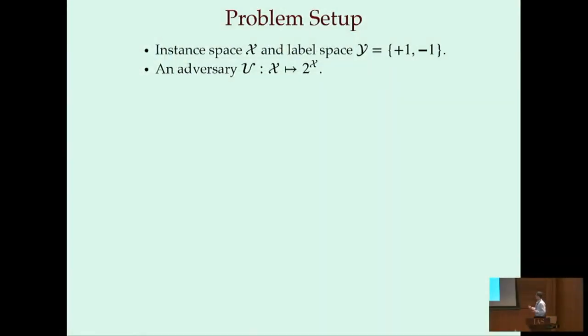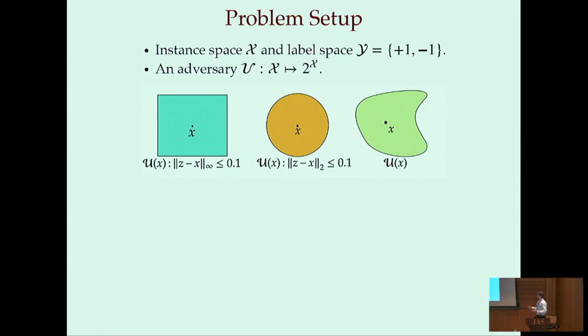So the setup is as follows. We have an instance space X, and think of this as the space of images, and we have two labels, plus and minus. We model adversarial perturbations as a map U that maps X to a set of allowed perturbations that can be chosen by the adversary at test time. We consider different classes of perturbation sets, so each point in the space X comes attached with a perturbation set, and this could be an L infinity ball around X, an L2 ball around X, or maybe just some other arbitrary set.